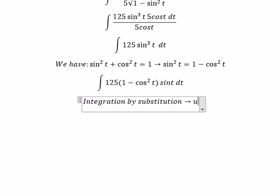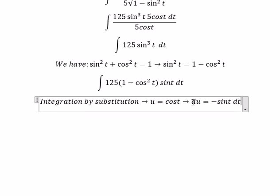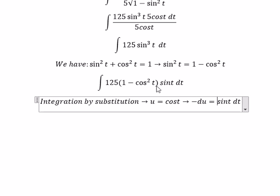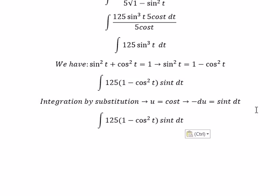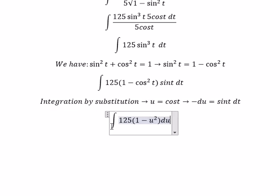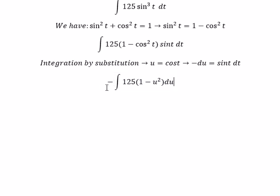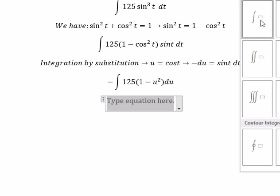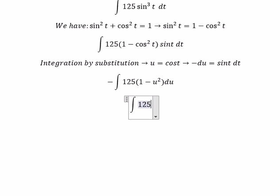We use substitution: put u equal to cos(t), so du equals negative sin(t) dt. We put the negative du in here. We change cos(t) for u, and sin(t) dt for negative du. After putting the negative in, we get the integral of 125 times (u² minus 1) du.